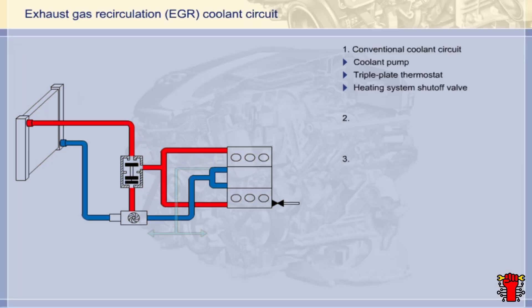The DE engine variant has two additional coolant circuits. Both can be connected and disconnected by means of a common shutoff valve. Let's look first at the coolant circuit for external exhaust gas recirculation.